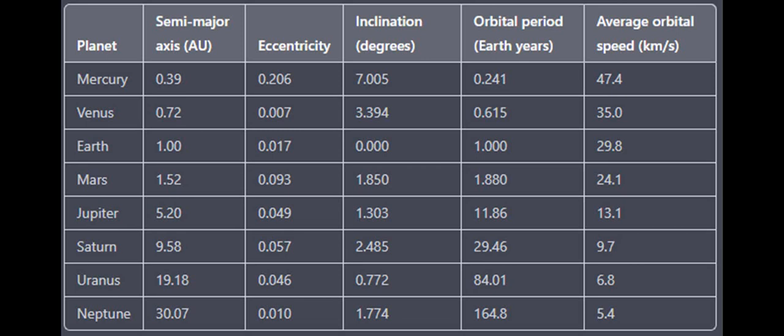Tilted and inclined orbits: the planets in our solar system orbit in roughly the same plane, known as the ecliptic plane. However, some objects have tilted or inclined orbits that take them out of this plane. One example is Pluto, which has an orbit tilted at an angle of 17 degrees relative to the ecliptic plane.